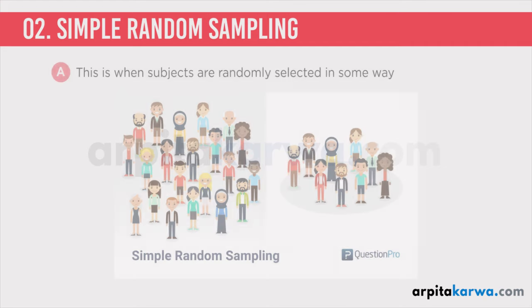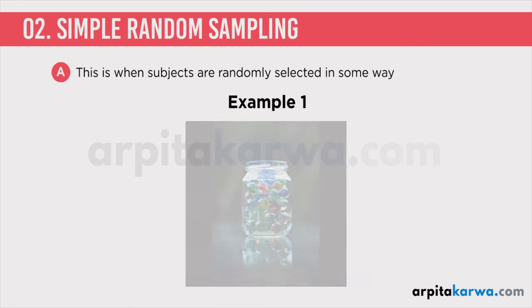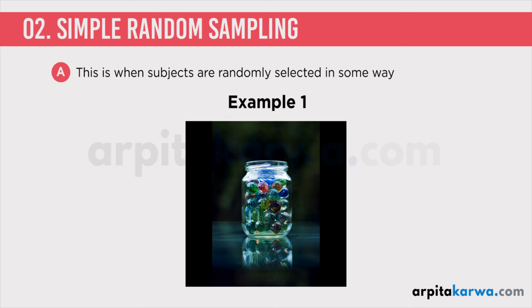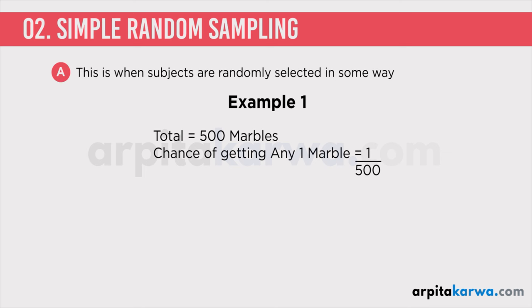There are four major types of probability sampling. The first one is simple random sampling. Simple random sampling is when subjects are randomly selected. For example, if you have a jar of marbles and you blindfold yourself, put your hand in the jar, and pick one marble — if there are 500 marbles in the jar, the chance of getting a particular marble is 1 by 500. That means every marble in the jar will have an equal chance of being picked as a sample.